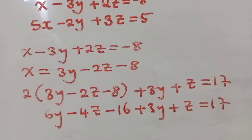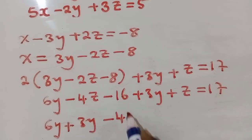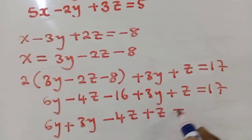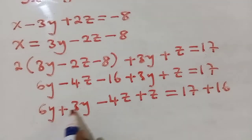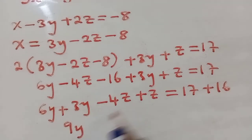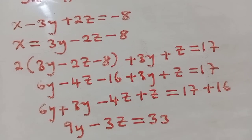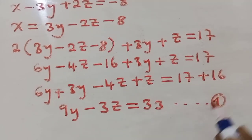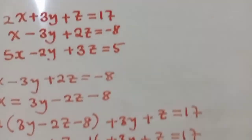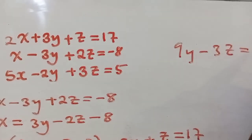We can now arrange our work and group the like terms: 6y plus 3y, and minus 4z plus z, equals 17 plus 16. These are like terms and we can add them — it gives us 9y minus 3z equals 33. So we call this Equation 1 and keep it: 9y minus 3z equals 33.